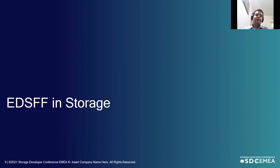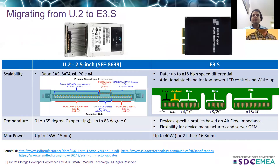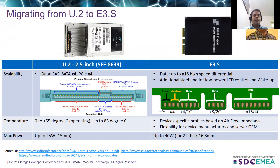Now let's look at how EDSFF form factors are used in storage applications. One very common form factor is the 2.5-inch SSD, defined in SFF-8639. The U.2 interface can support SATA, SAS, and PCIe signals on a single connector. However, this is an inefficient utilization of pins because at any given time a device can support only one type of high-speed protocol, which also limits the performance of the PCIe interface even though sufficient pins are available.